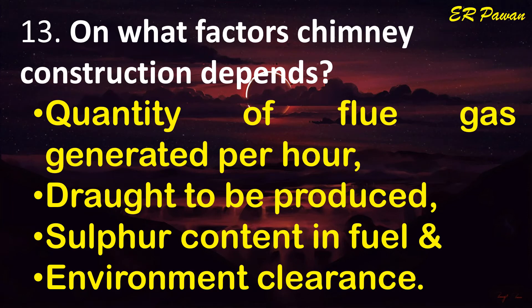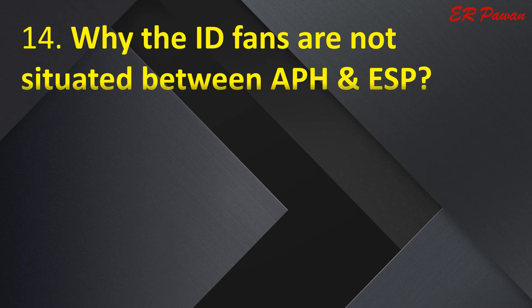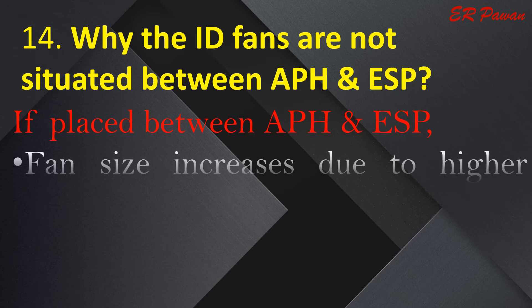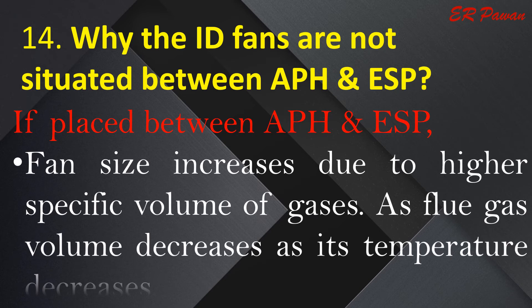Question 14: Why are ID fans not situated between the air preheater and electrostatic precipitators? If placed between the air preheater and electrostatic precipitators, fan size increases due to higher specific volume of gases, as flue gas volume decreases as its temperature decreases.